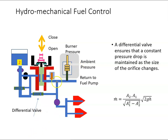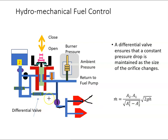The fuel then, once out of the fuel control unit, goes to the high pressure shutoff valve, and from there into the pressurizing and dump valve, and from there into the nozzles and into the actual combustion can. That's a very basic overview of a hydromechanical fuel control unit.